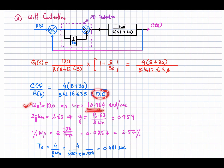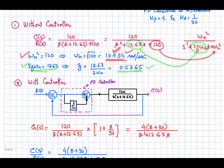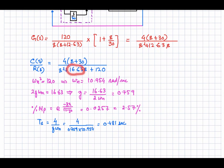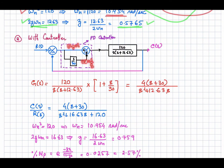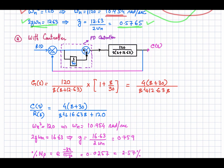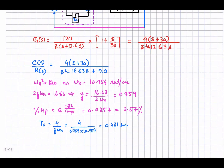Comparing with the standard second order equation, ωn² is the same — the natural frequency does not change; it remains the same with and without the controller. Comparing the s-coefficient with 2ζωn, we get 2ζωn = 16.63, so zeta with the PD controller equals 0.759. The PD controller has increased the damping ratio. With this higher damping, the overshoot decreases to 2.57 percent.